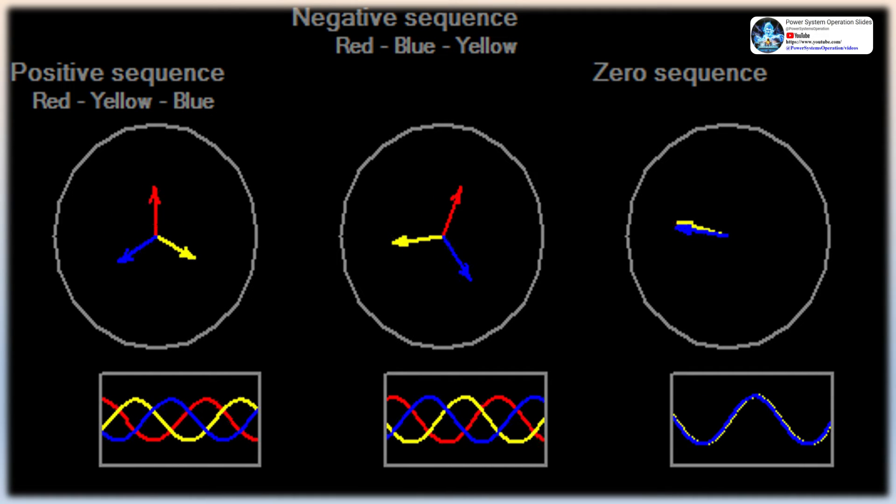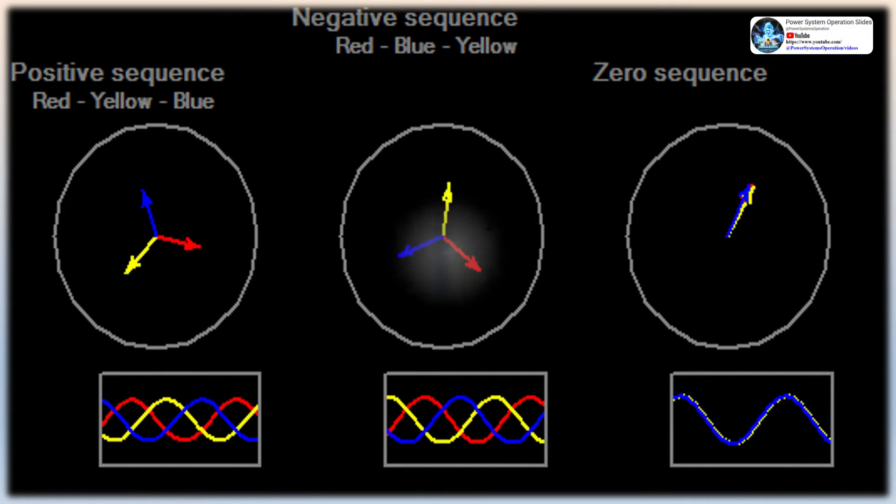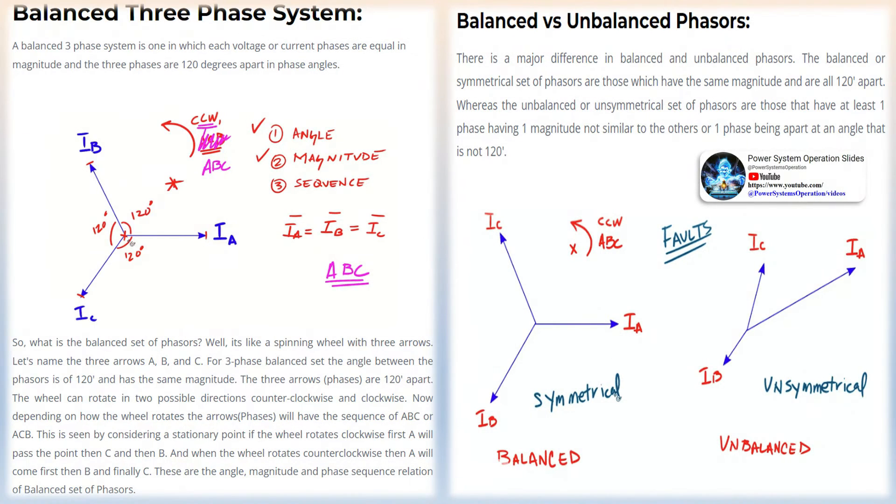The method of symmetrical components is used to simplify fault analysis by converting a three-phase unbalanced system into two sets of balanced phasors and a set of single-phase phasors, or symmetrical components. These sets of phasors are called the positive, negative, and zero-sequence components.